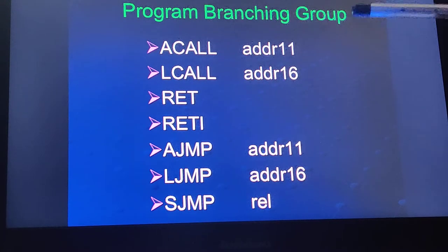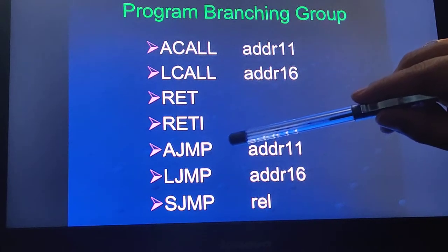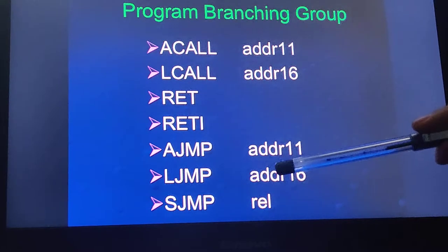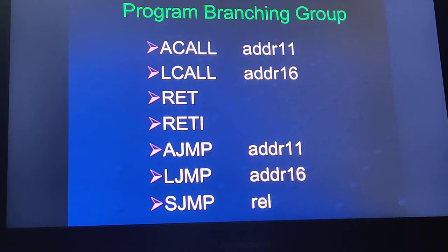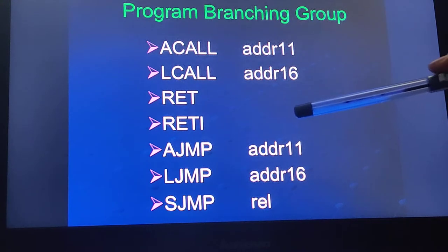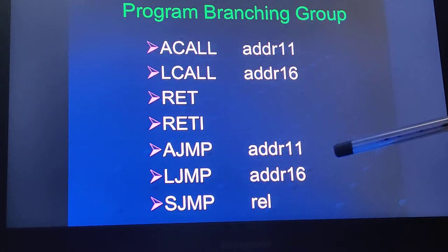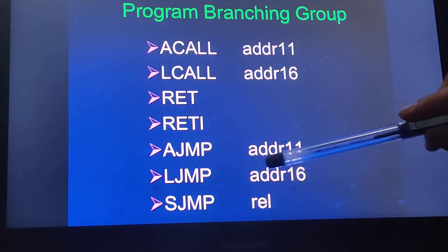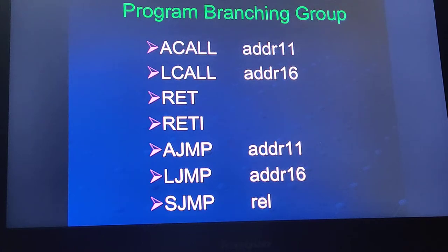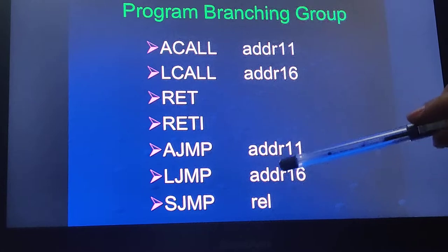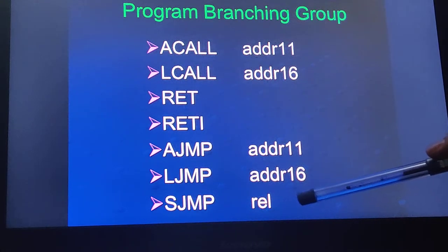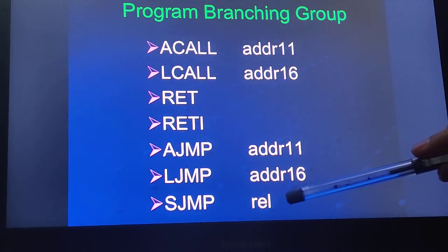Similar to call instructions, there are jump instructions: absolute jump, long jump, and short jump. In absolute jump, 11 address lines are used, so the jump is within the 2KB range. In long jump, 16 address lines are used, so the jump possible is 64KB. For short jump, a relative address is used, which covers about 128 bytes.